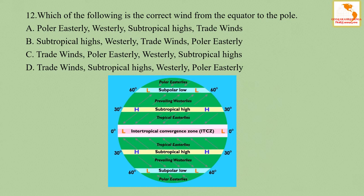Question number twelve: which of the following is the correct wind pattern from the equator to the pole? The correct answer is option D — trade winds, subtropical high, westerlies, and polar easterlies.